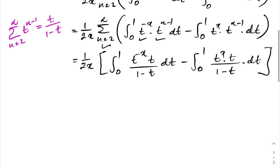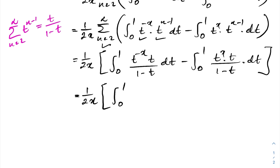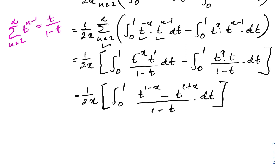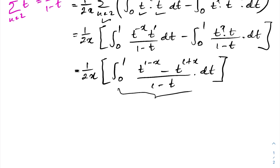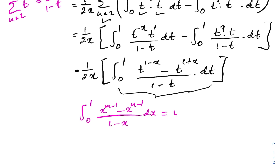Since both integrals share the same denominator and boundary, we combine them: 1 over 2x times the integral from 0 to 1 of (t^(1−x) minus t^(1+x)) over (1 minus t) dt. This integral is familiar from a previous video where we solved the integral from 0 to 1 of (x^(m−1) minus x^(n−1)) over (1 minus x) dx, which equals digamma(n) minus digamma(m).